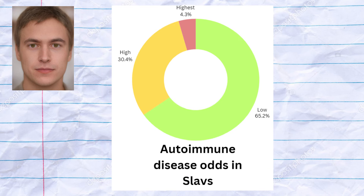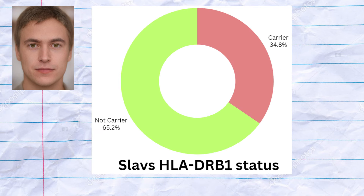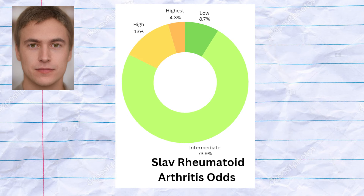The medieval Slavs had significantly elevated odds of epithelial cancers based on 8q24 genotypes. They also had elevated odds of autoimmune disease based on HLA genotype, which reflects on their predisposition to autoimmune conditions like type 1 diabetes, rheumatoid arthritis, multiple sclerosis, and ankylosing spondylitis. The medieval Slavs had a very strong predisposition to type 1 diabetes and multiple sclerosis, with 8 samples being HLA-DRB1 carriers. They had a relatively high predisposition to rheumatoid arthritis as well.